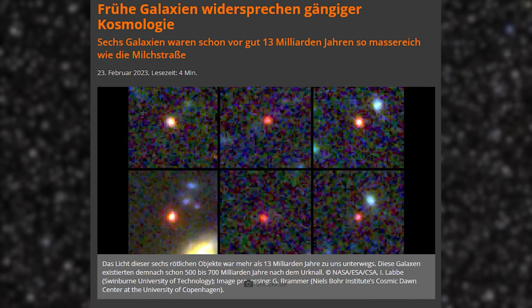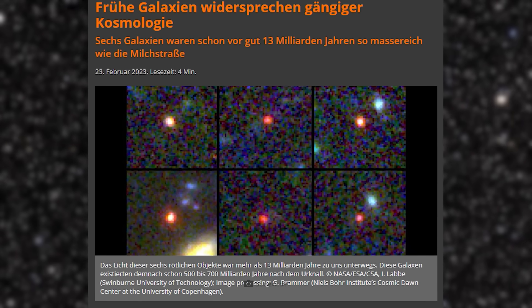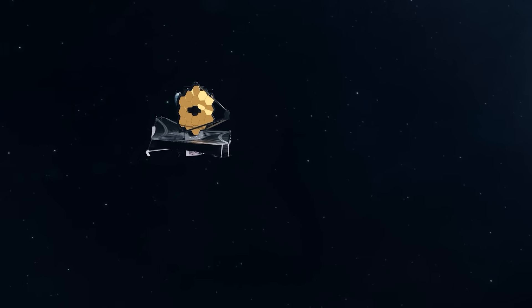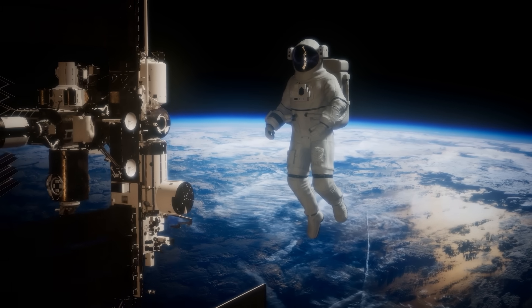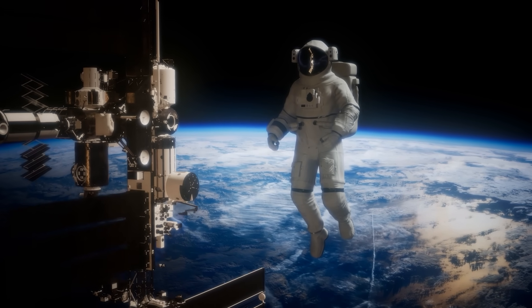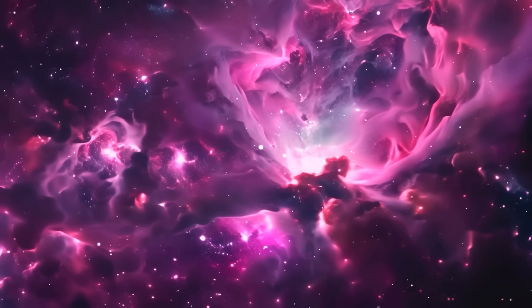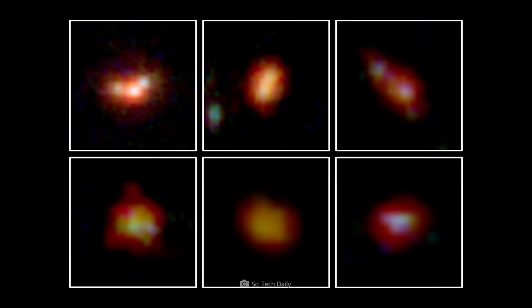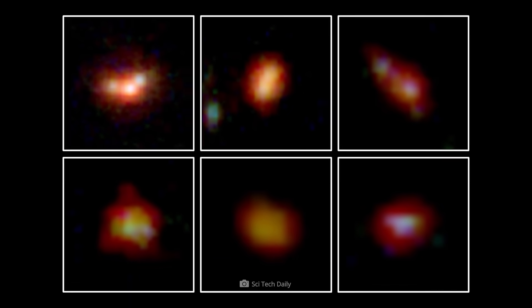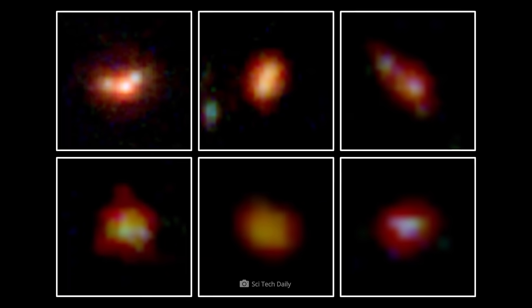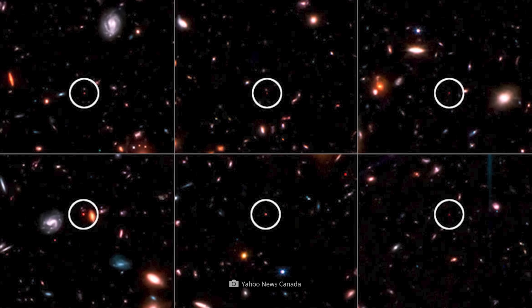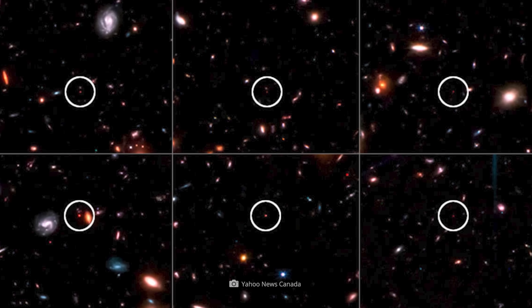And yet, these remarkable finds are only one side of the Webb coin. The whole truth is that Webb has found objects that no astronomer could ever have expected to find, for the simple reason that their existence was considered impossible. But it all started so inconspicuously. More precisely, with six simple points of light, which subsequently earned themselves the inglorious nickname Universe Breakers and paved the way for the greatest cosmological crisis of our time.